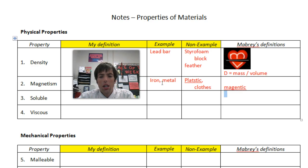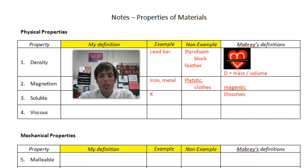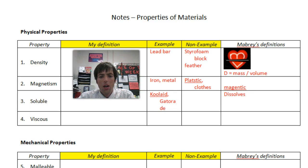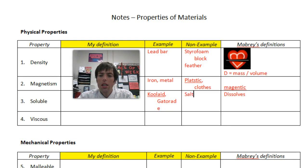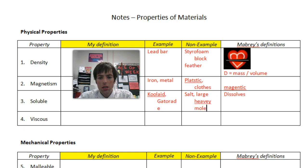Soluble. The key word for soluble is 'dissolves.' It's stuff like Kool-Aid or Gatorade or a lot of different powders — that's all good stuff that dissolves. Stuff that doesn't dissolve would be like large, heavy molecules — for example, salt and water.